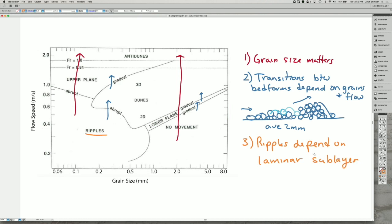When we talked about the Bernoulli effect, we often had a small flow change, and when that's happening within the laminar sub-layer, you tend to get ripples. Usually when the flow is slow enough to form ripples in fine grain sizes, there's no movement in the larger grain sizes. So ripples depend on the laminar sub-layer, whereas other bed forms depend on the structure of the turbulence.